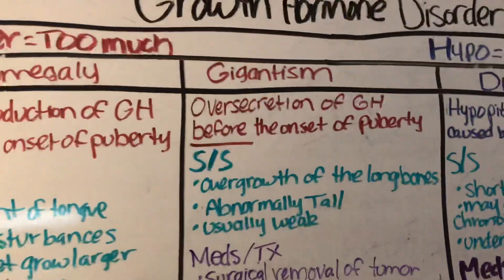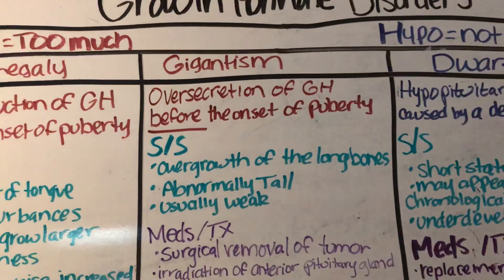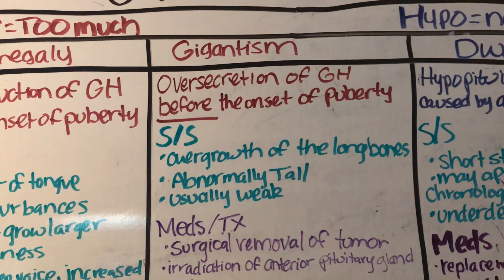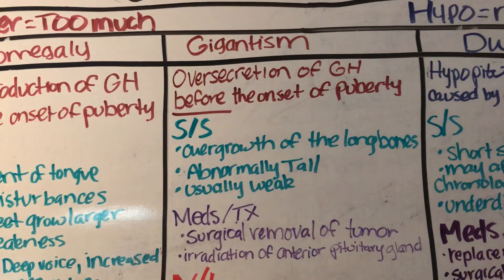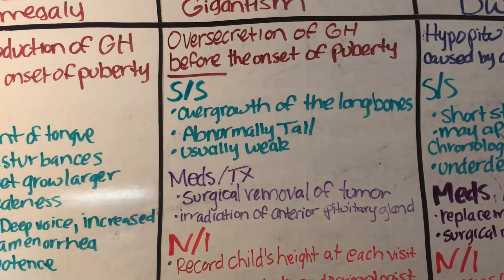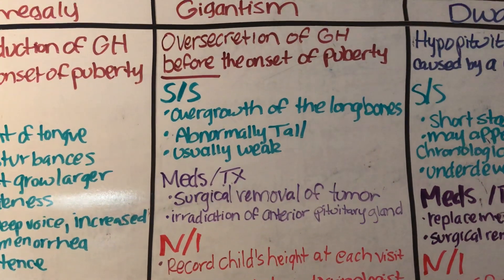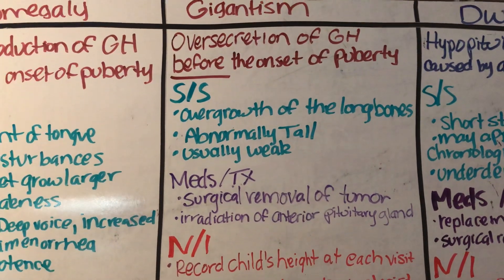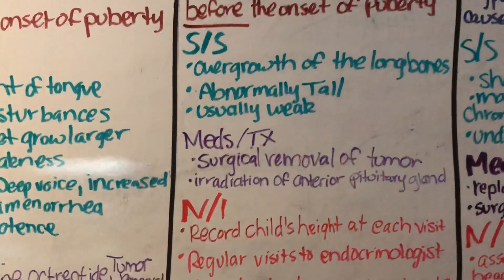Gigantism is also an over-secretion of GH, but this occurs before the onset of puberty. Signs and symptoms include overgrowth of the long bones, so they will be abnormally tall. Even though they are tall, they are usually weak.